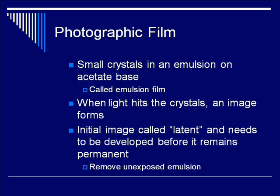Let's start with photographic film. Photo film usually consists of small crystals, usually silver bromide, in an emulsion on an acetate base — usually called emulsion film. When light hits these crystals, an image forms as the crystals break down. This initial image is called latent and needs to be developed to become permanent. A big part of that developing process involves removing the unexposed portion of the emulsion so that those crystals do not become exposed later.